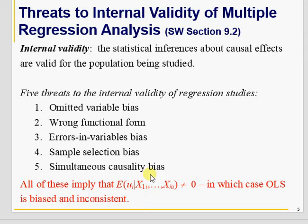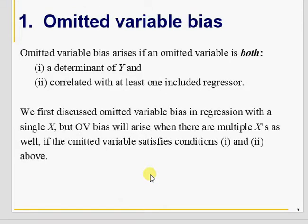The main threats to internal validity of a model are: omitted variable bias, wrong functional form, errors in variable bias, sample selection bias, and simultaneous causality bias — five threats. The first one — omitted variable bias — I have discussed in Chapter 6: if a variable is a determinant of Y and is correlated with X, and you don't include it, it will lead to omitted variable bias.